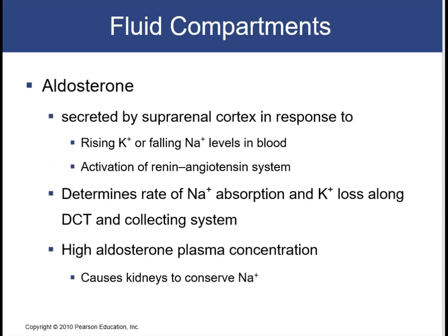Aldosterone is another important hormone. It is secreted by the adrenal cortex in response to either a rise in potassium or a loss of sodium levels in the blood. It will also be released in response to activation of the renin-angiotensin system. What aldosterone does is determine the rate of sodium absorption and potassium loss along the distal convoluted tubule and collecting system of the kidney. High aldosterone plasma concentration will cause the kidney to conserve sodium ions and dump potassium in the urine.